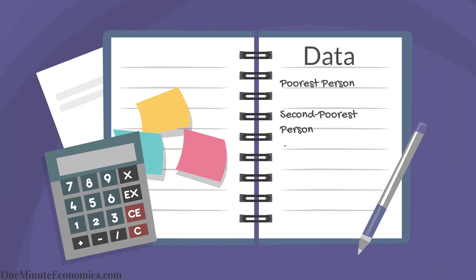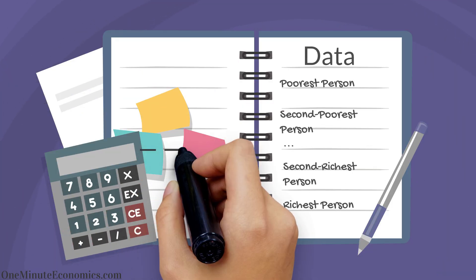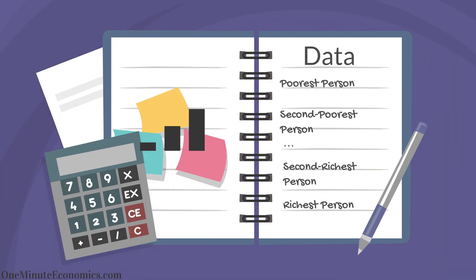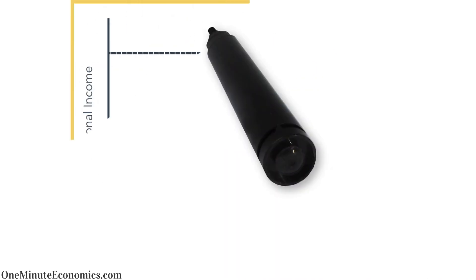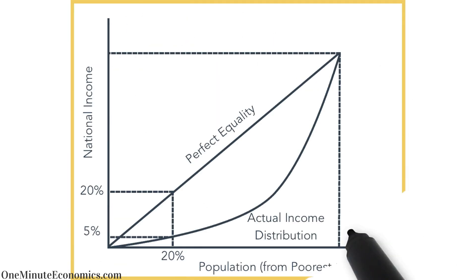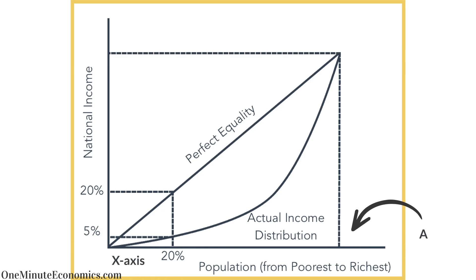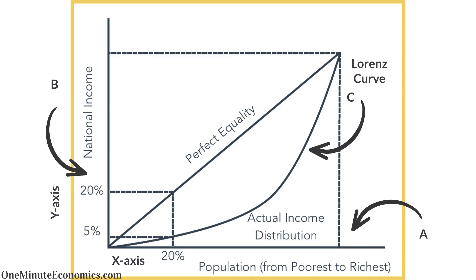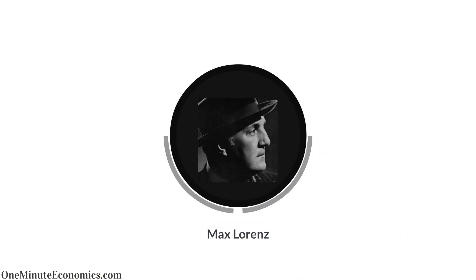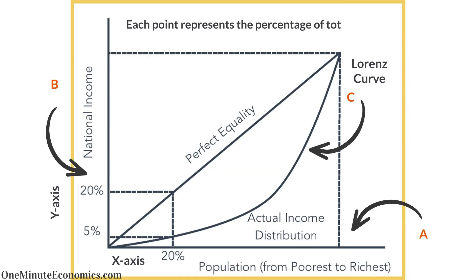We calculate it by: Step 1, gathering income data from every person and sorting it from lowest to highest. Step 2, creating a graph where the x-axis shows the cumulative percentage of people from poorest to richest, the y-axis shows the cumulative percentage of total income, and the actual income data forms a curve called the Lorenz curve, named after US economist Max Lorenz. Each point represents the percentage of total income earned by x percent of the population.